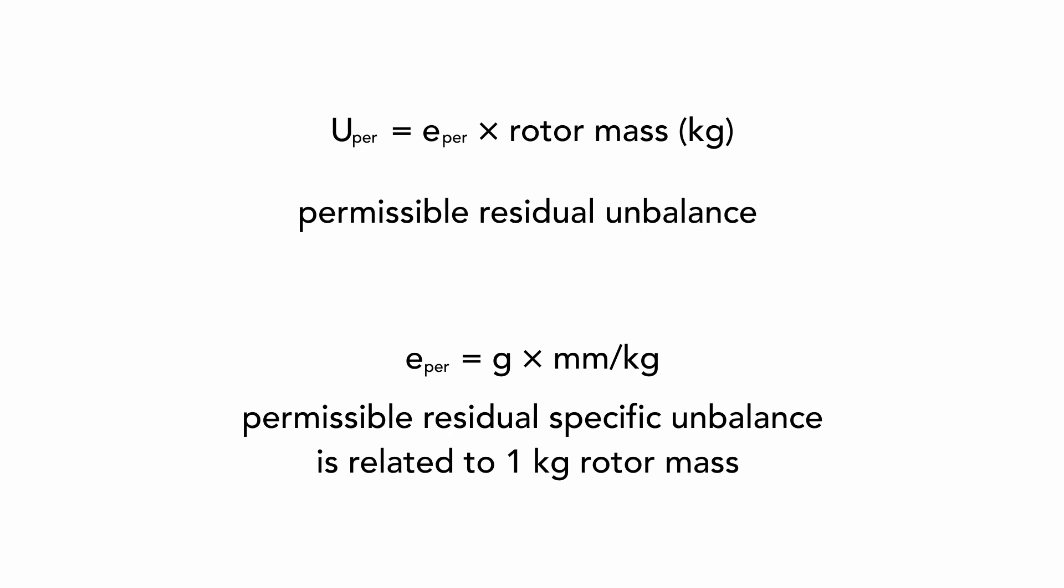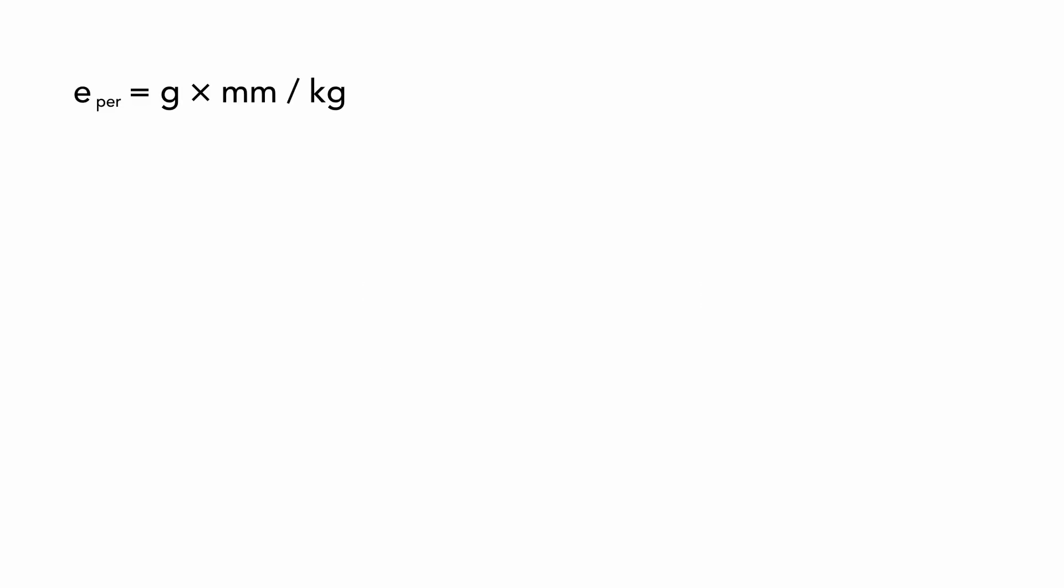We must multiply the E-per by mass. The E-per is permissible residual unbalance for the rotor with one kilogram mass. The E-per is called permissible residual specific unbalance. Now look again to the rotor on the picture. It has the geometrical center just in the middle of the circle. When it is perfectly balanced then also center of gravity is in the same position. Now I add heavy spot. The center of gravity moves. I can measure the distance between geometrical center and the center of gravity in micrometers.